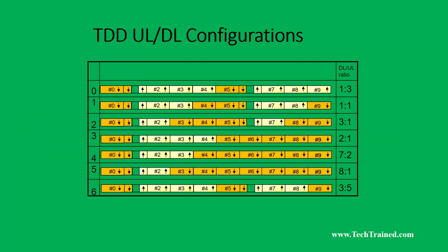In the TDD radio frame, different subframes carry only downlink information while some carry only uplink information. As you can see in this diagram, there are seven different configurations of Frame Structure Type 2 or TDD radio frames. Each configuration depends on how many subframes carry downlink versus uplink information, while subframe 2 and subframe 6 are always switching subframes. The last column shows the downlink-to-uplink ratio, computed based on the number of downlink and uplink subframes.